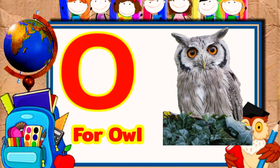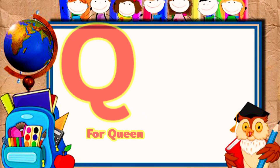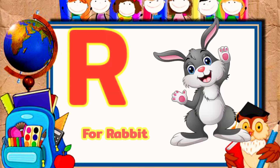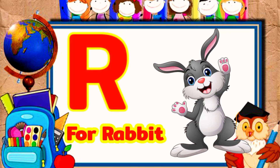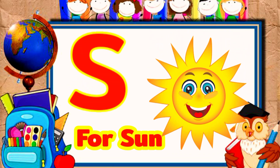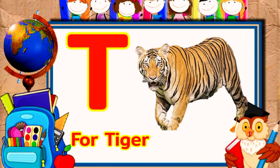P for parrot, Q for queen, R for rabbit, S for sun, E for tiger.